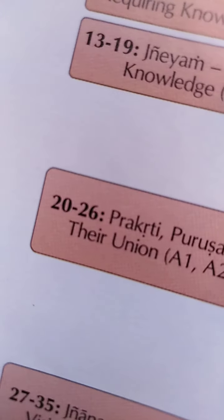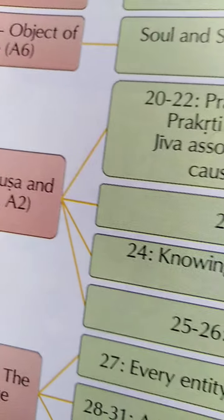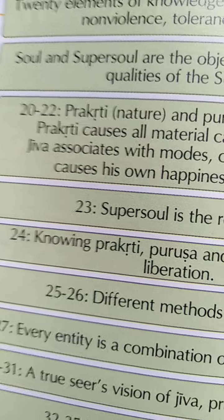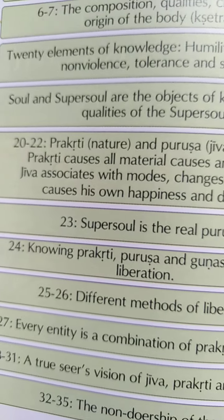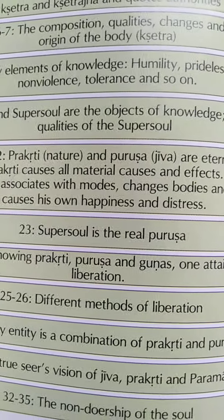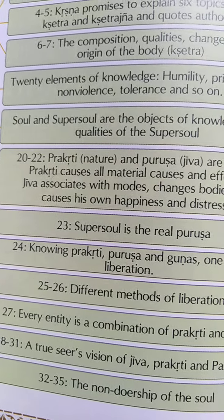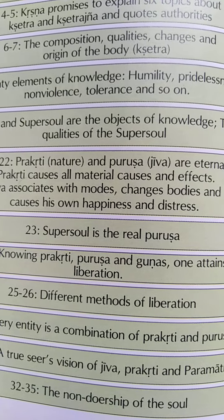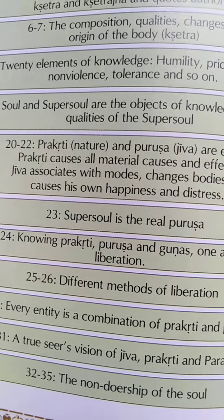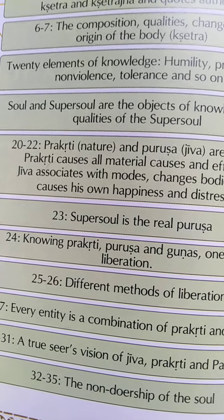Then in the twentieth to twenty-sixth shlokas, Prakriti, Purusha and their union is described — what is Prakriti, what is Purusha and how they are united with each other. Krishna says that Prakriti causes all material entanglements, causes and effects, so all things happening in this world are caused by Prakriti only. The Jiva associates with the modes, changes bodies, and causes his own happiness and distress — explaining why one living entity is happy and another is distressed.